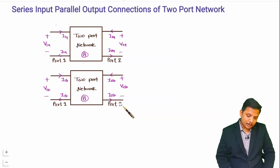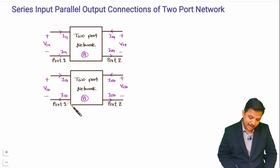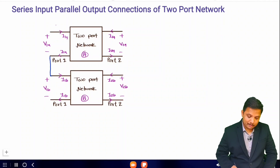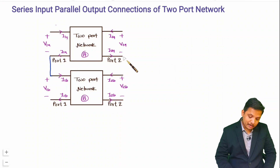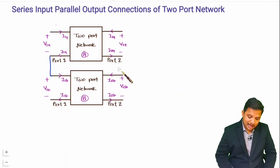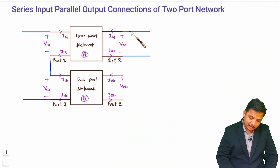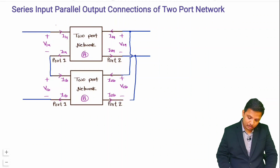Now I'll explain how we can have a series input connection. When we talk about series input, these are the inputs and they are connected in series. Secondly, we will be connecting a parallel output connection — these are the outputs and I'll be providing parallel connection at the outputs. Let me extend these lines, and at the output for parallel connection, this terminal should connect over here and this terminal should connect over here.